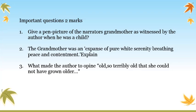The first question: Give a pen picture of the narrator's grandmother as witnessed by the author when he was a child. You have to write about her physical description — how she looked, what she did, and what she was wearing, as described by the narrator. The second question: The grandmother was 'an expanse of pure white serenity breathing peace and contentment' — you have to write about her calm and peaceful state.